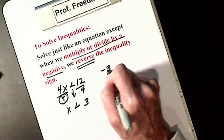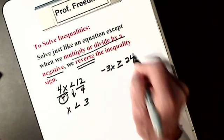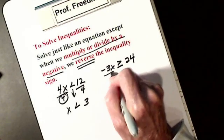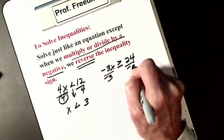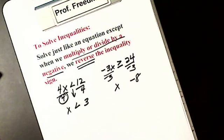If I want to solve -3x is greater than or equal to 24, I solve just like an equation. I'm going to divide each side by negative 3. I get x, I get negative 8. I ask one question.